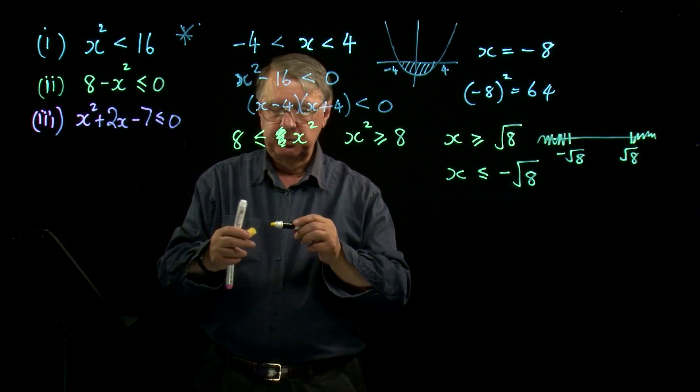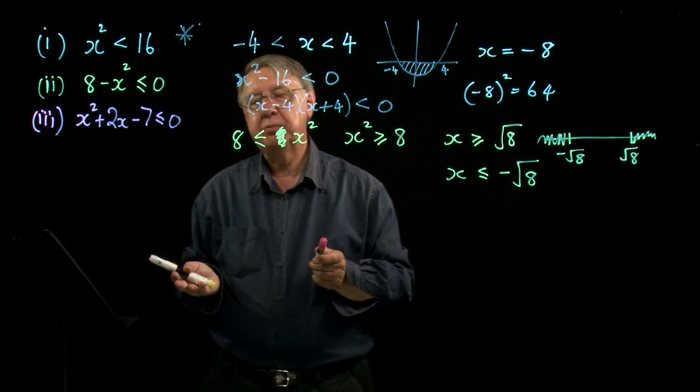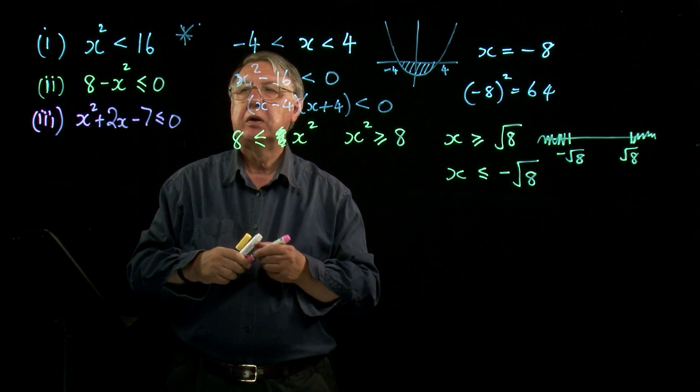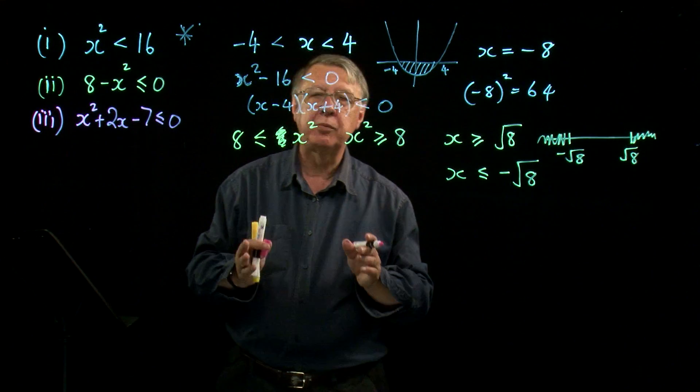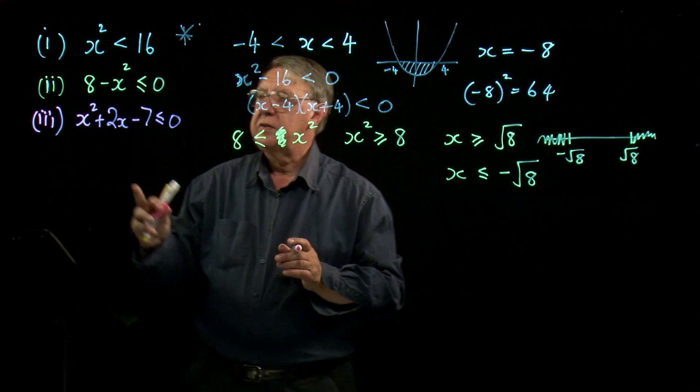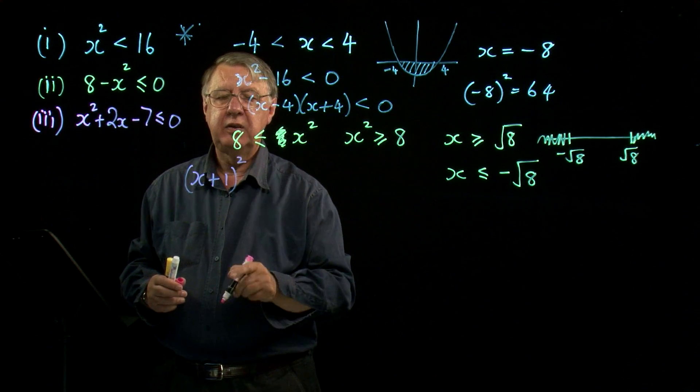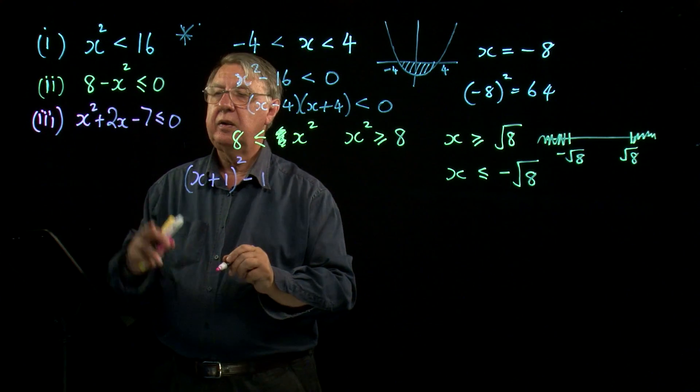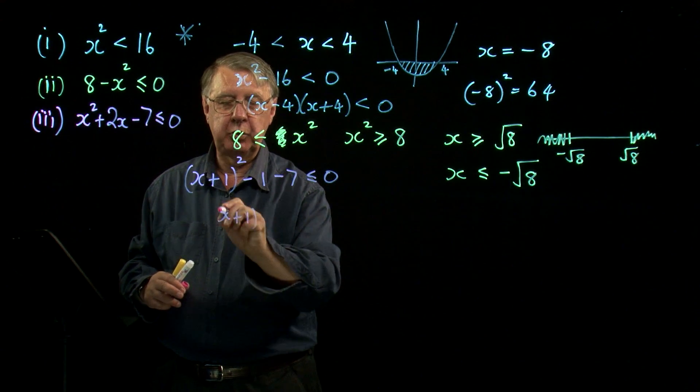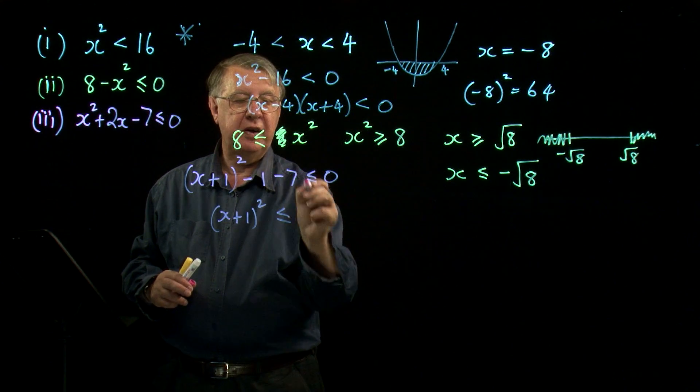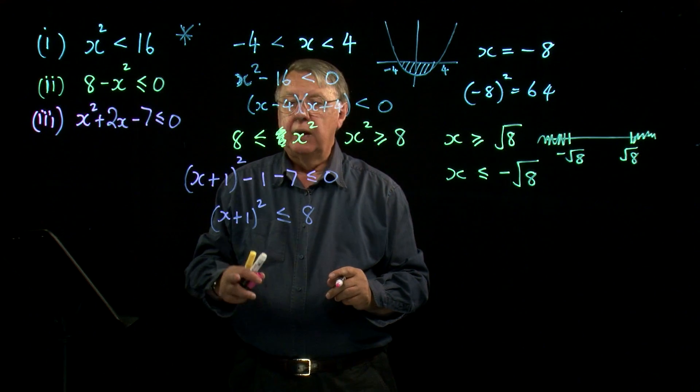So given that one there, on the previous method, what would you be doing? You'd try and factorise it. And of course, it doesn't factorise. So you think, oh crikey, what have I got to do next? I've got no idea. Well, completing the square will always come to your rescue. So I'll complete the square. So that's x plus 1 squared. Square that number and take it away, minus 7 and put the negative 8 on the other side as plus 8.